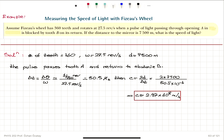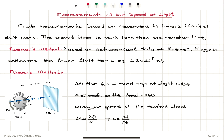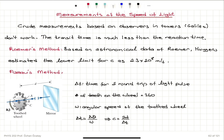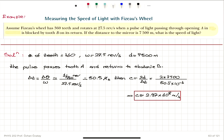Where does the error come from in this calculation? We don't know exactly where the light hits on obstacle B, since obstacle B has a finite width. We also don't know exactly at which point in opening A the light pulse passed through. Because of that, we have an estimation of the speed of light: 2.97 × 10⁸ meters per second.